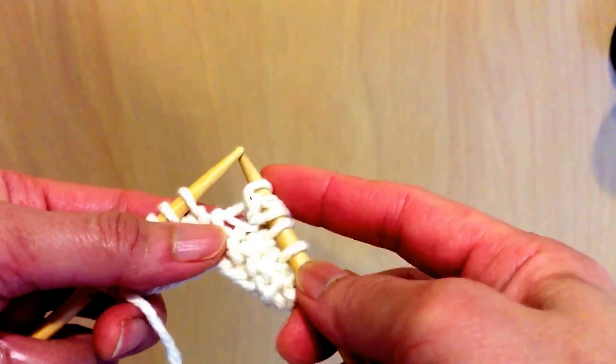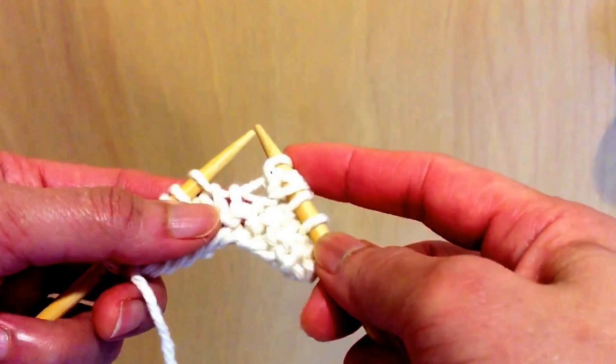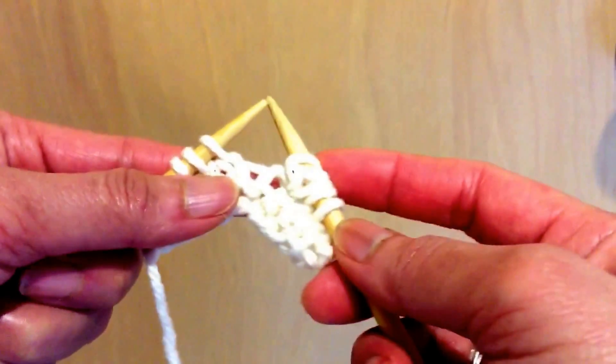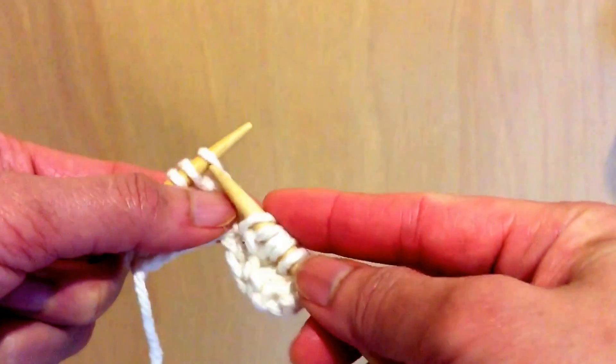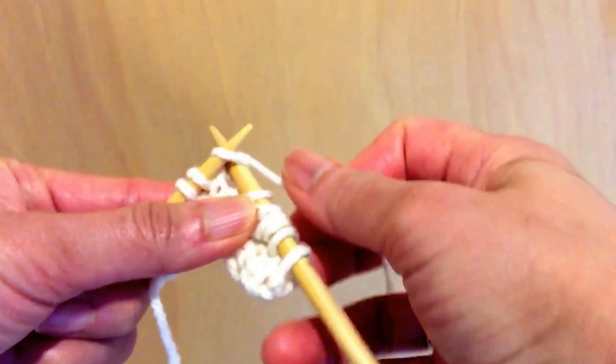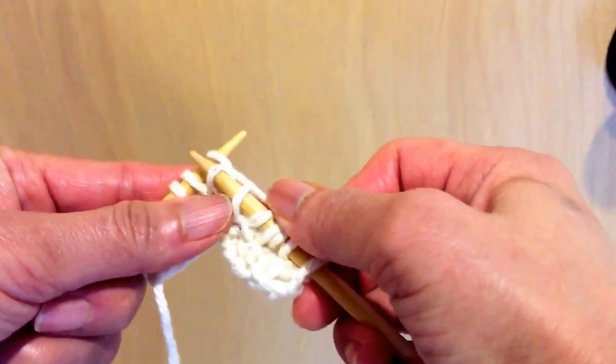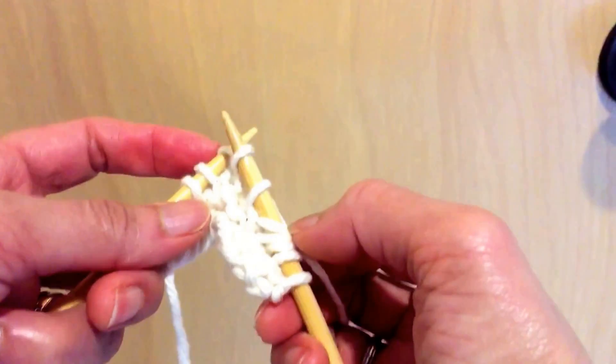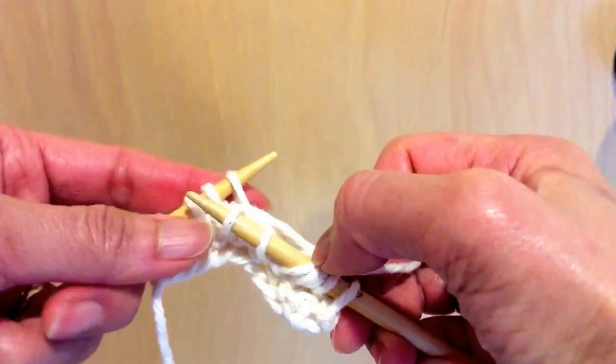Okay, we're going to do it again. So we got one set done. So we're going to move on to the next stitch. We're going to do the same thing. Knit. Don't slip the yarn off yet. I mean don't slip the stitch off the needle yet. It's still there. See that? It's still there.